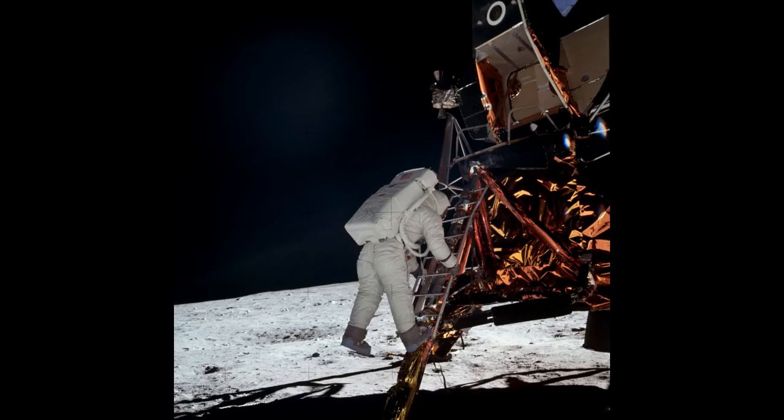This is the main reason why Buzz Aldrin is so brightly lit in this picture, even though he's in the shadow of the lunar module. Most of the light filling in the shadow is scattering and retroreflecting off the lunar surface. The rest is reflecting off of Neil Armstrong's spacesuit.